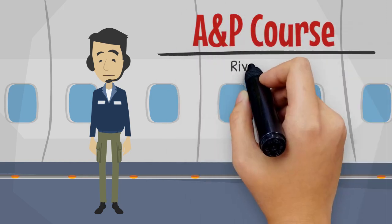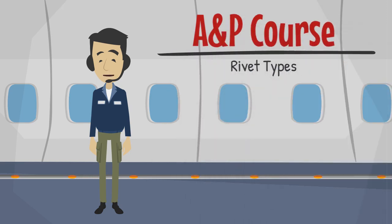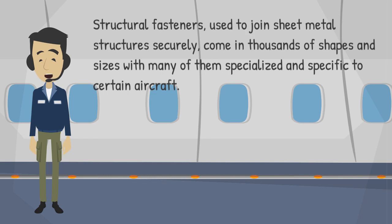Welcome to this training session on Aircraft Rivet Types. Structural fasteners, used to join sheet metal structures securely, come in thousands of shapes and sizes, with many of them specialized and specific to certain aircraft.